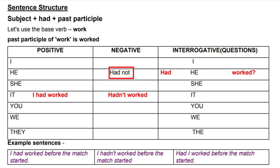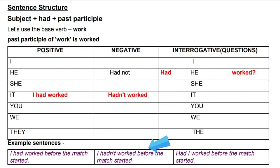Moving on to negative sentences, we put 'not' after 'had,' so we say 'I had not worked.' Our example sentence is: 'I hadn't worked before the match started.' Notice that we have used the contraction of 'had not,' which is 'hadn't.'